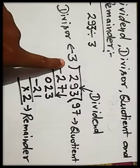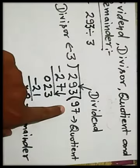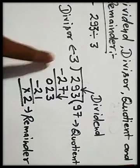This 3 is called divisor. 293 is called dividend. And 97 quotient and 2 is remainder.